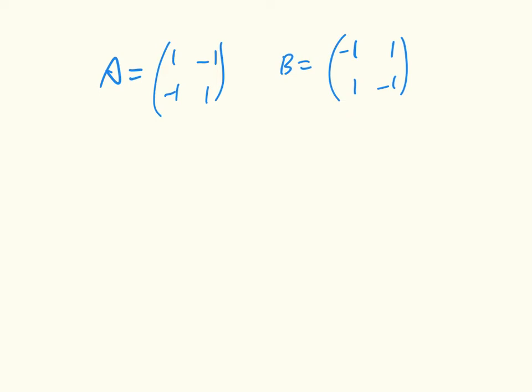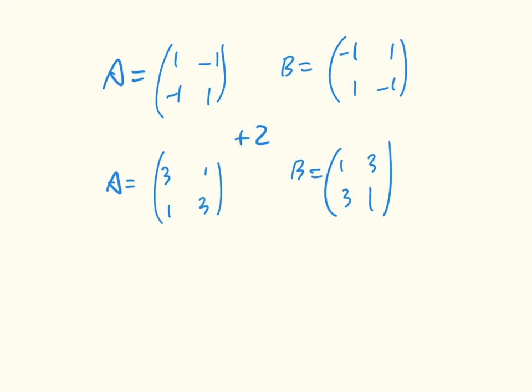But remember, we said we have to only consider games where there are no negative elements. So the first thing we do is add 2 to all the utilities to give us that A is now 3, 1, 1, 3, and B is 1, 1, 3, 3. So we're going to use this.